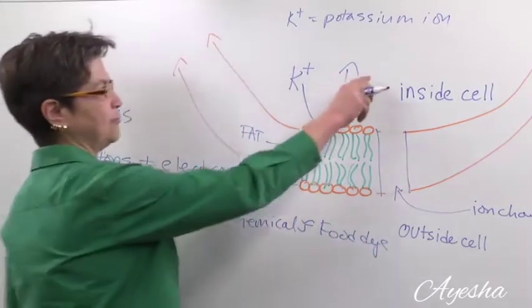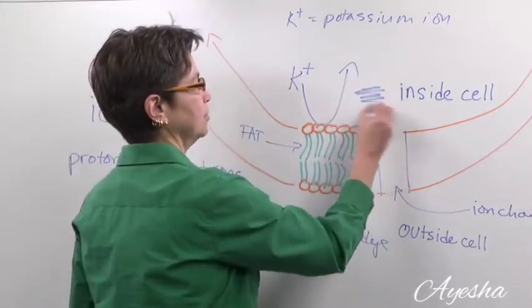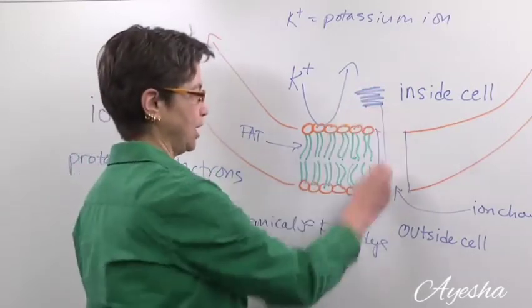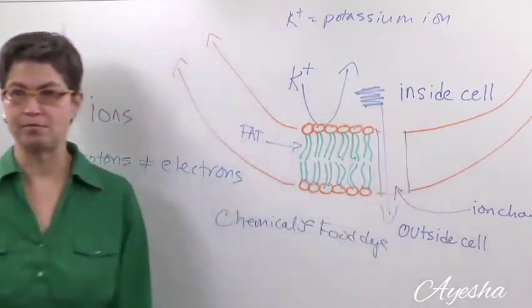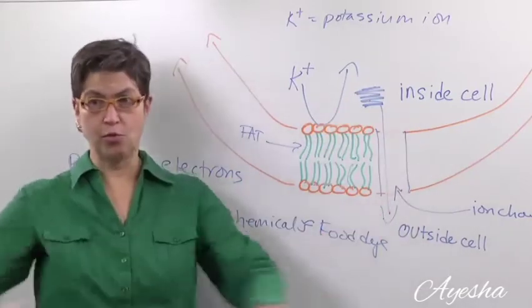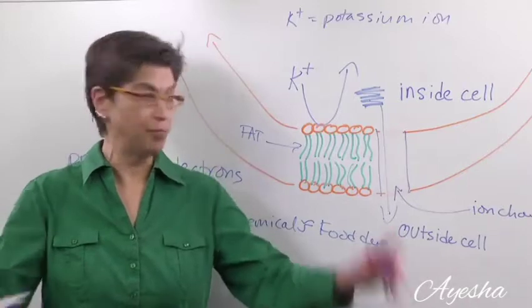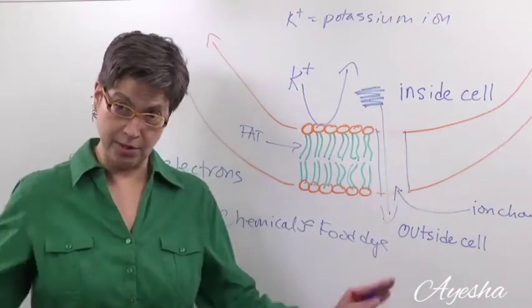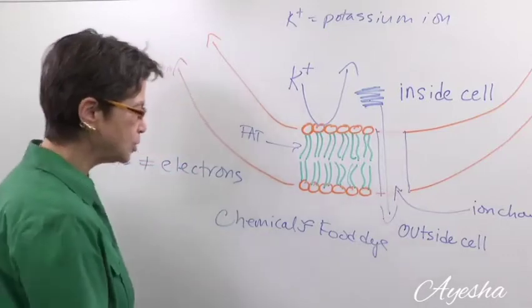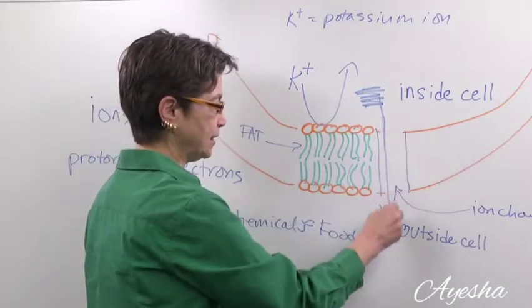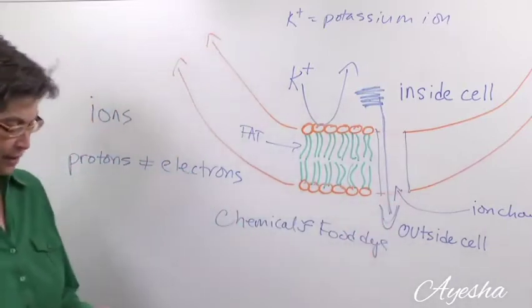So if I put a lot of blue dye here and there's no blue dye here, well, the blue dye is going to go that way. Because the gradient is, there's more here than there. Or in the end, if there's an open door, the amount of blue dye everywhere is going to be even. So the chemical force for this potassium ion is to leave, leave the cell.